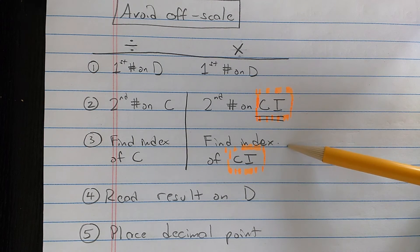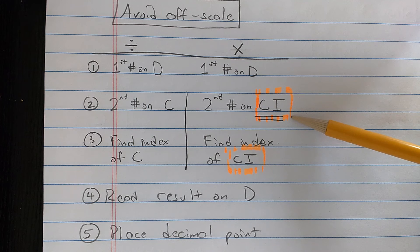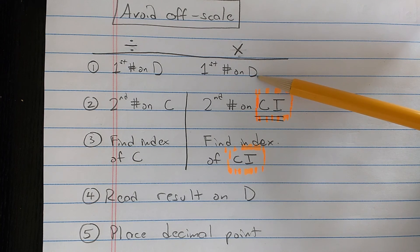The new technique, on the right here, we see the new technique, which is very similar to that technique, but for multiplication, is to use the CI scale. How do you do it?